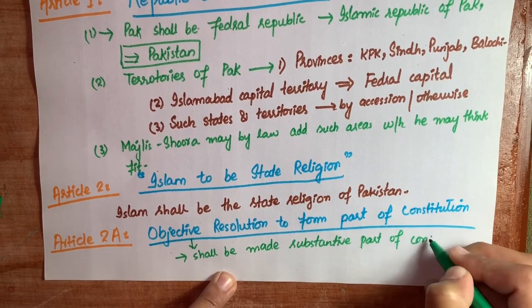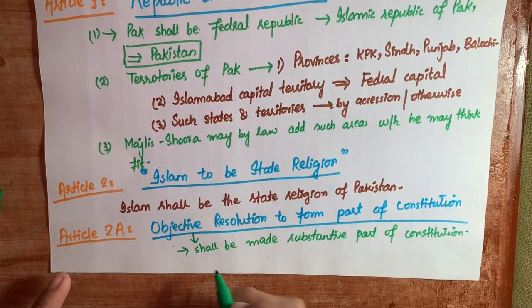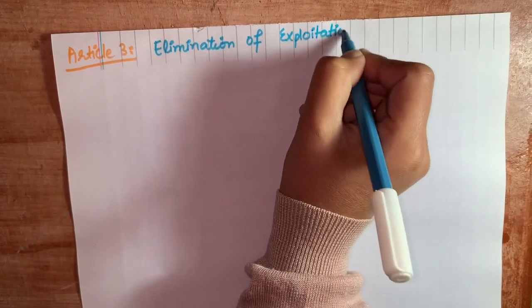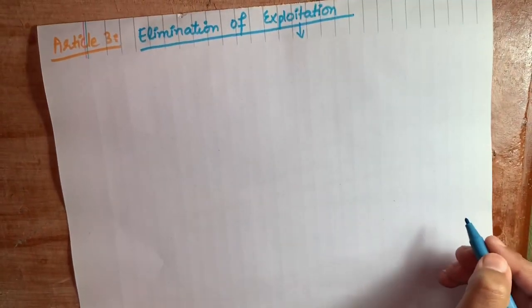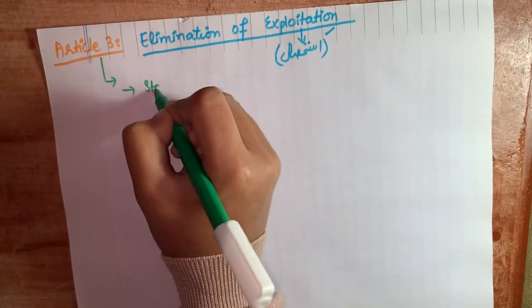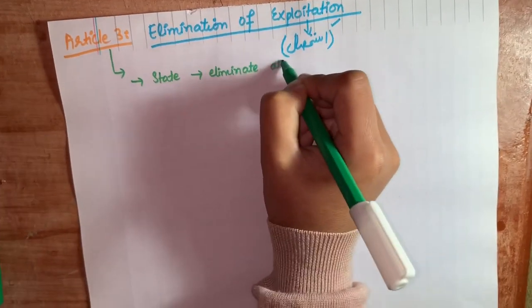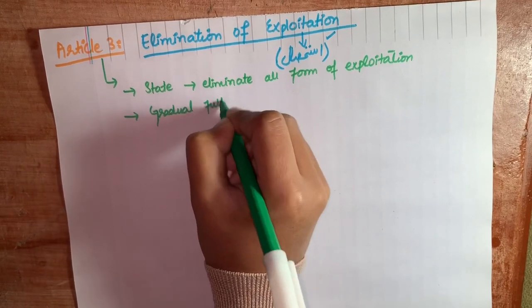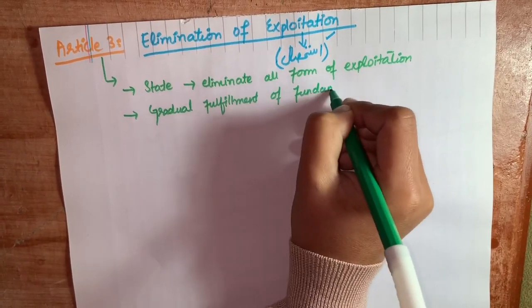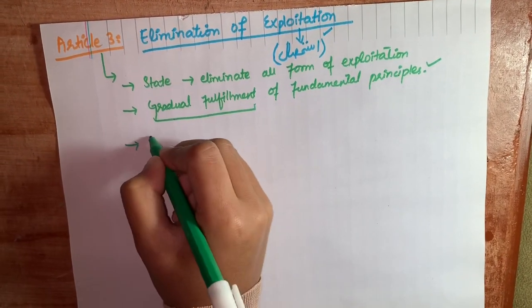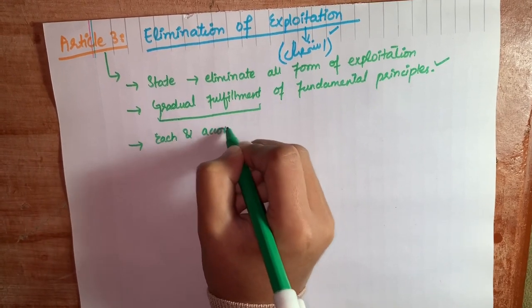Article 3 is related to elimination of exploitation. Article 3 says that the state shall ensure the elimination of all forms of exploitation — state har qism ke istehsaal ko khatm karegi — and the gradual fulfillment of fundamental principles. Teesra point kehta hai: from each according to his ability, to each according to his work.